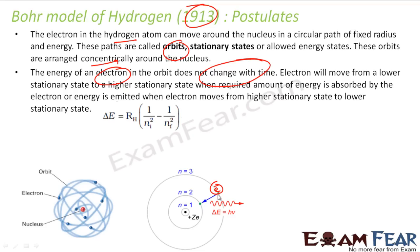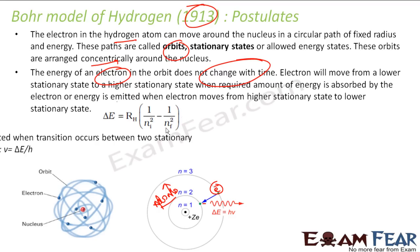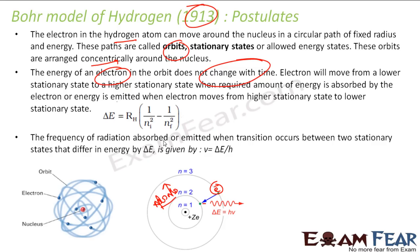For example, in this case if it emits some energy, it will go to the lower state. If it absorbs energy, it will go to the higher state. And delta E is nothing but RH — the Rydberg constant — times (1/n_initial² − 1/n_final²). The frequency of radiation absorbed or emitted is delta E divided by H. So we got frequency as delta E by H.